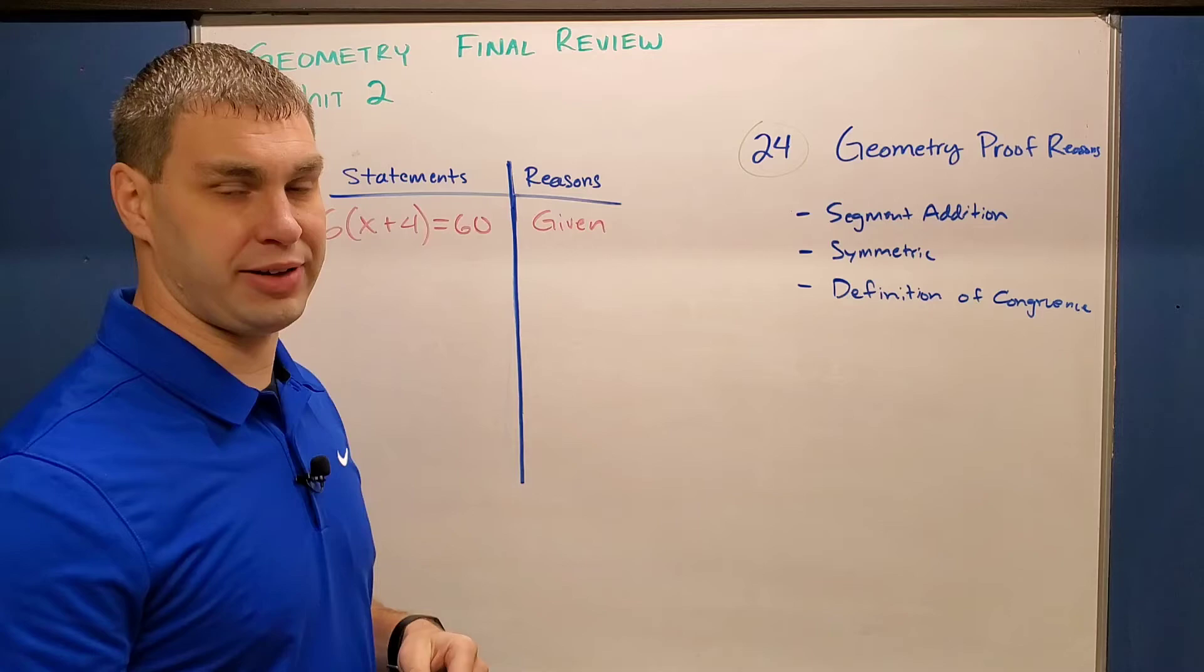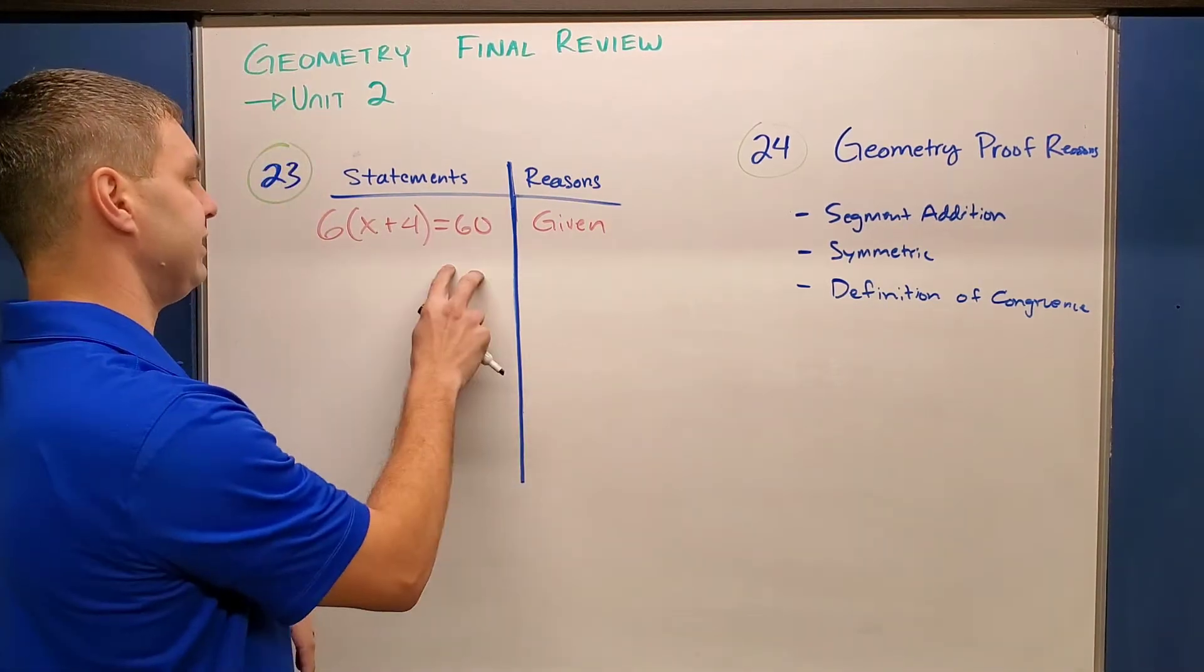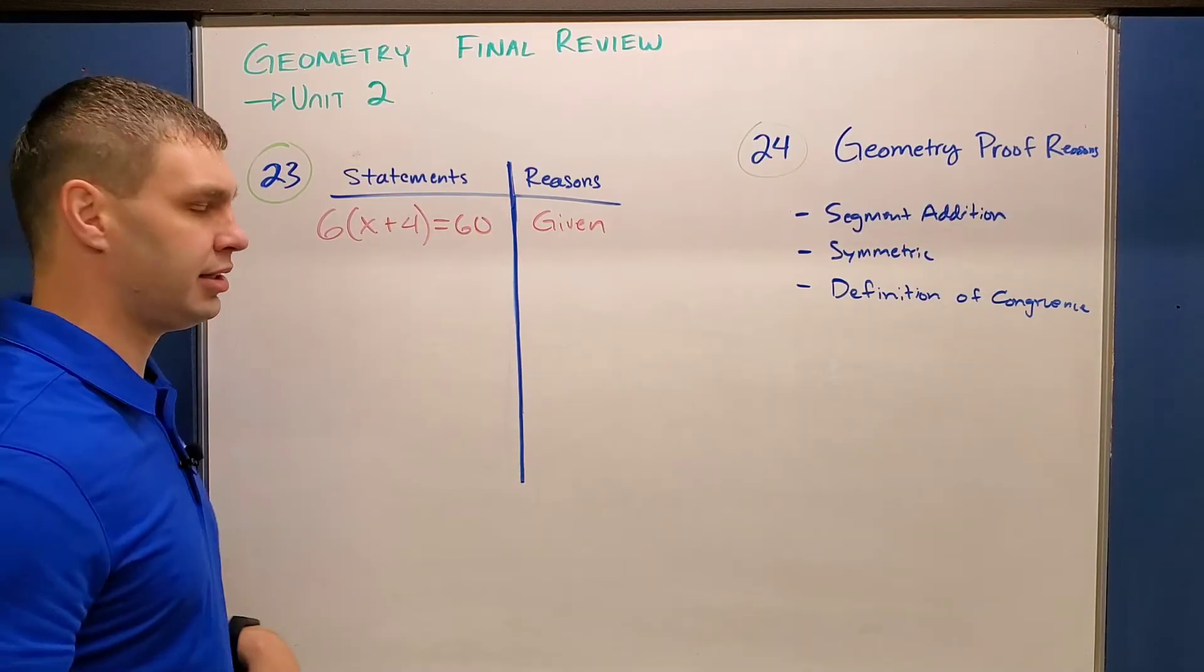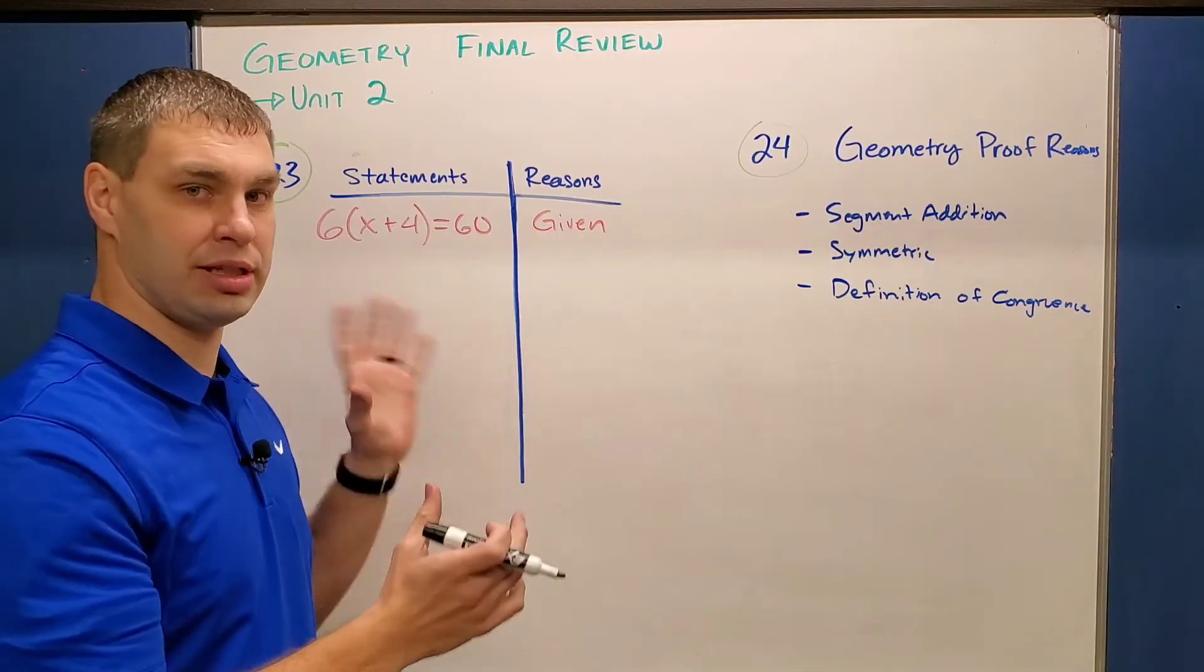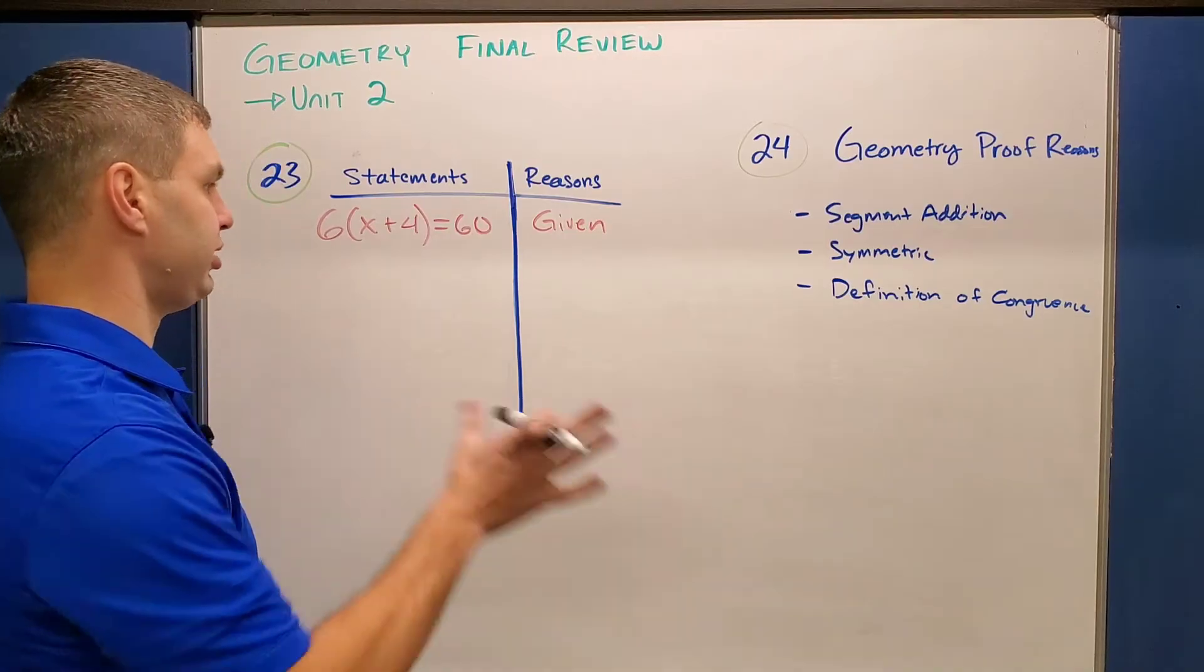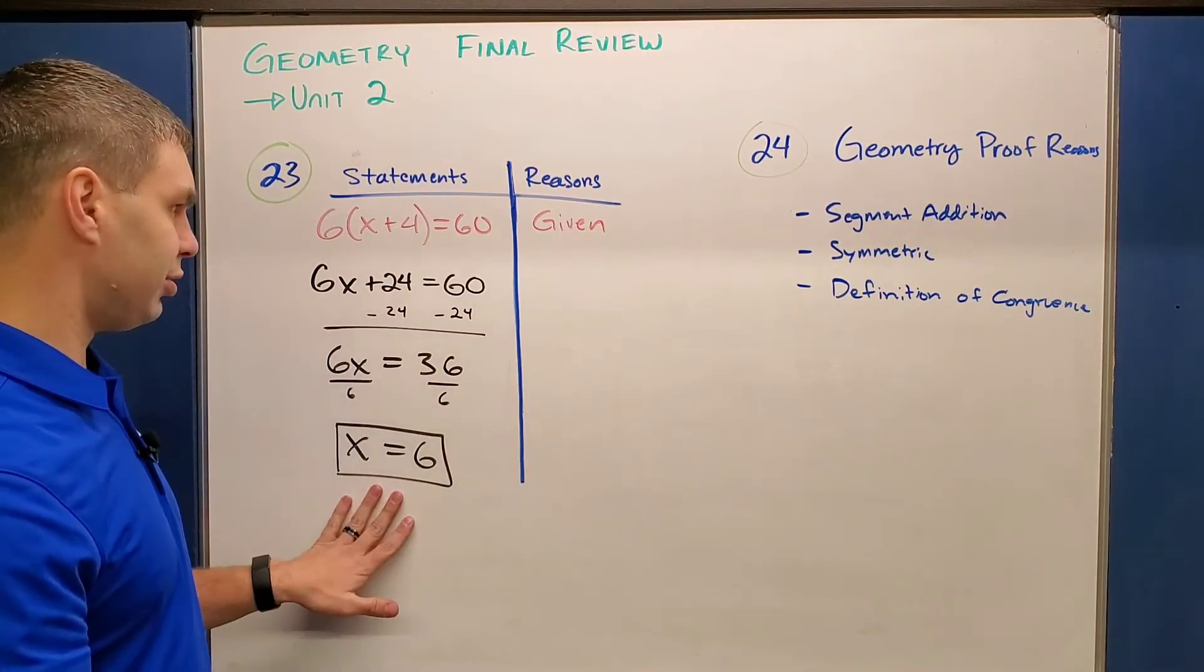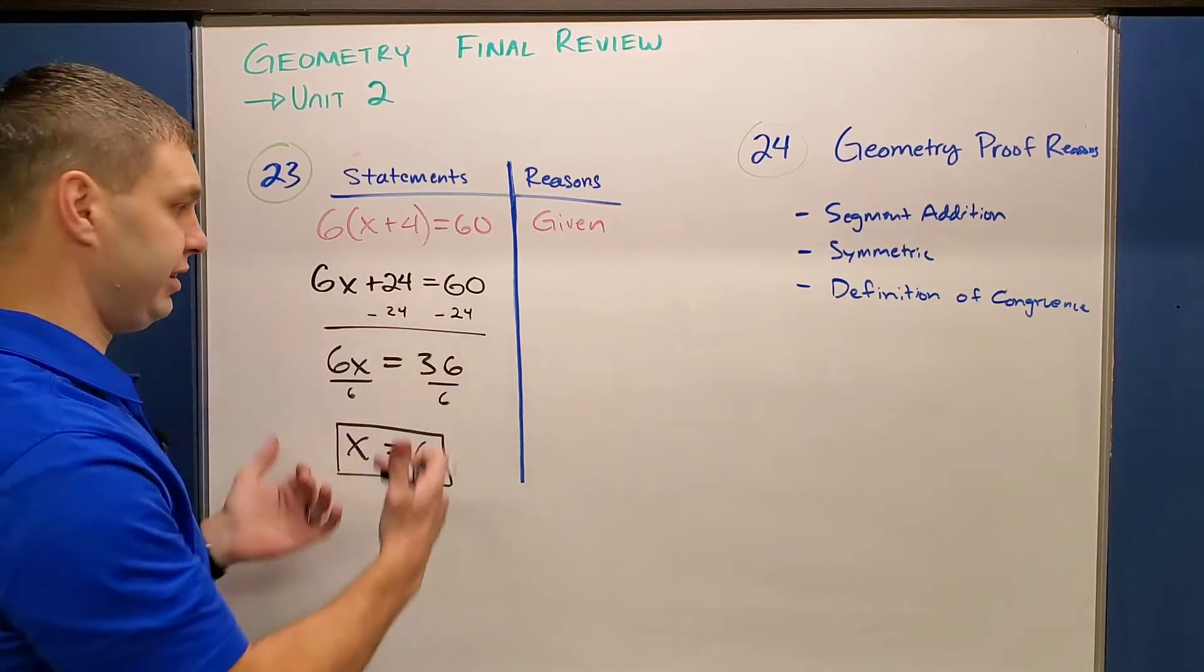All right guys, next problem we're going to do as we review for our first semester final here in geometry is an algebraic proof. So our first line is given to us. Our first line reason is always the given. In this case, our first line for our statement says 6 times the quantity x plus 4 equals 60. What I would encourage you to do is go ahead and solve this like you would any other equation on the left side, and then go back and write your reasons on the right side as you do this. So let me solve the left side here for us. So after doing the math, looks like x equals 6.